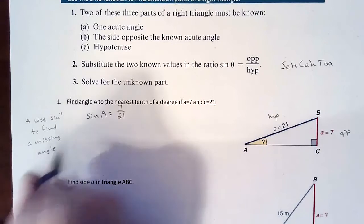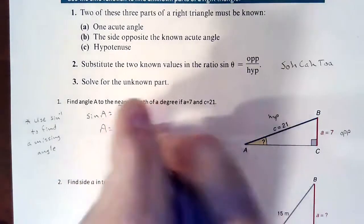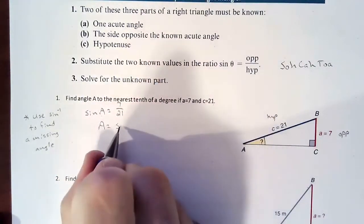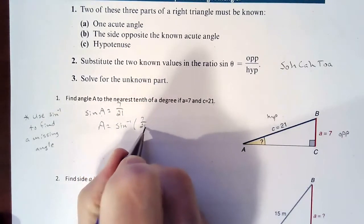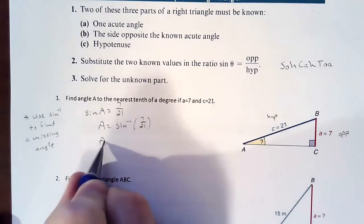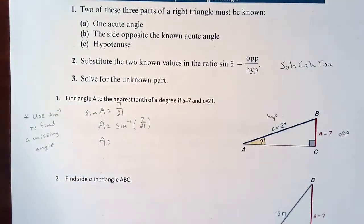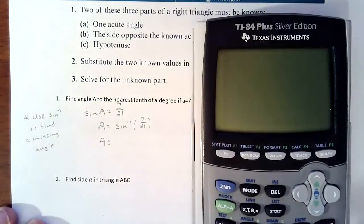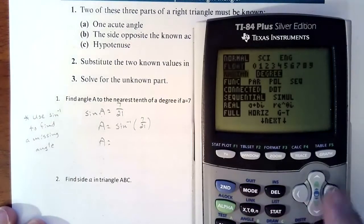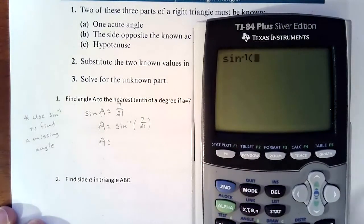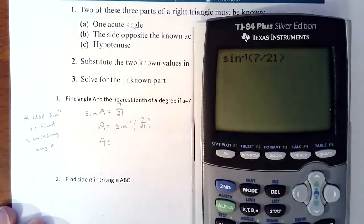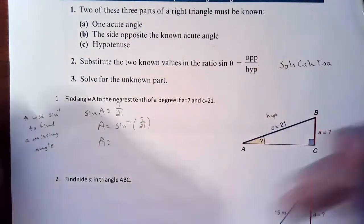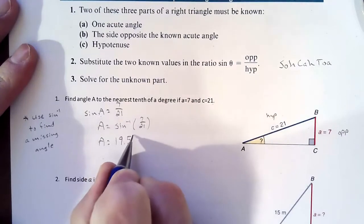So we're going to type into the calculator the inverse sine of seven over 21. And then that value that we get out of that is going to be our angle measurement. We are taking this and we're rounding it to the nearest tenth. I'm going to make sure that we are in degrees. So we are going to do the inverse sine of seven over 21, and we're looking at 19.5 degrees.